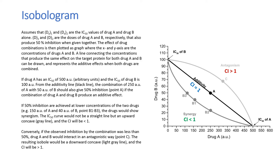Assume that DX1 and DX2 are the IC50 values of drug A and drug B alone, and D1 and D2 are the doses of drug A and drug B that also produce 50% inhibition when given together. The effect of drug combinations is then plotted as a graph where the x and y axes are the concentrations of drug A and drug B. A line connecting the concentrations that produce the same effect on the target protein for both drugs can be drawn and represents the additive effects when both drugs are combined.